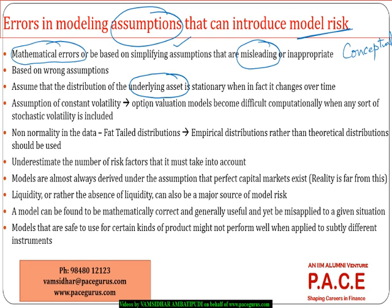One common scenario is the assumption about the probability distribution — the statistical distribution of the underlying asset. Many times, we assume that it is stationary: the distribution does not change. If it is following a normal distribution, we assume that under all conditions and all markets the asset returns follow a normal distribution only. Whereas in reality, the distribution can change over time and behave differently in different economic scenarios.